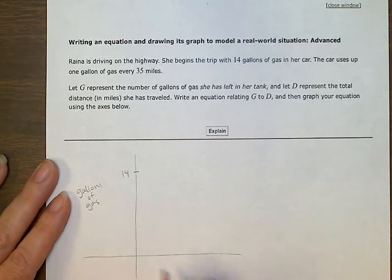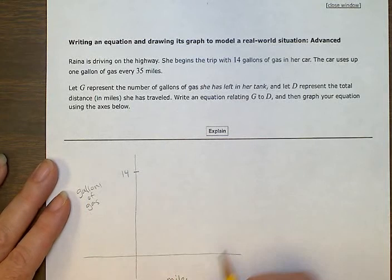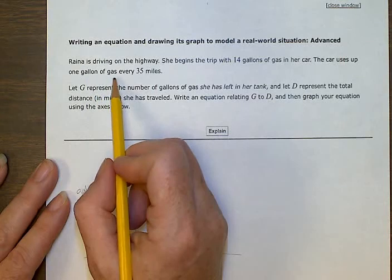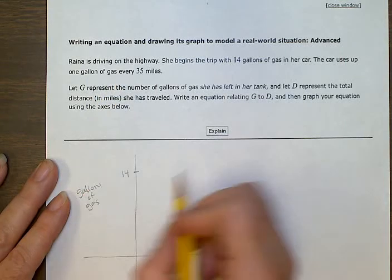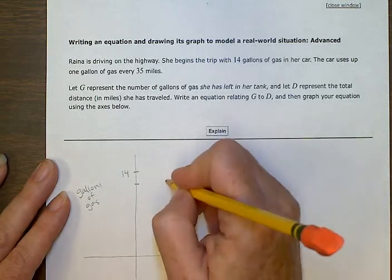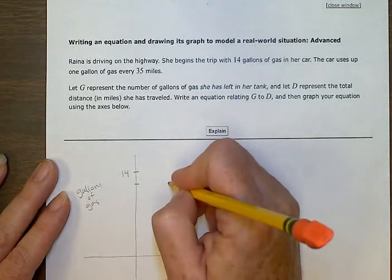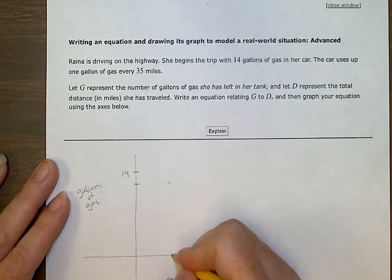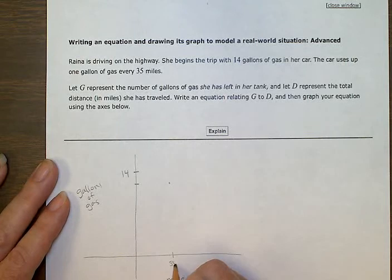So this side is going to be miles. And it says she's going to use up one gallon of gas for every 35 miles. See, that's in the sentence. So to go down to 13, she'll have driven 35 miles.